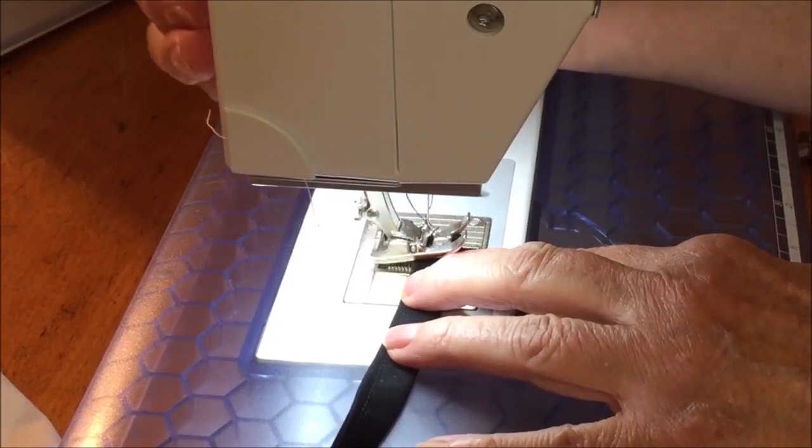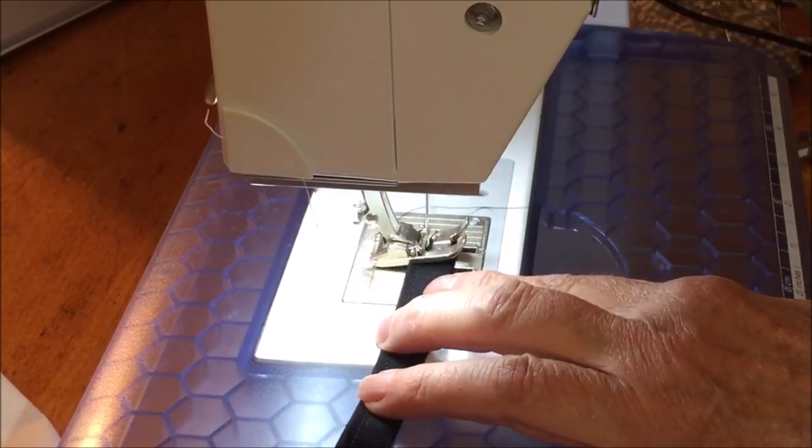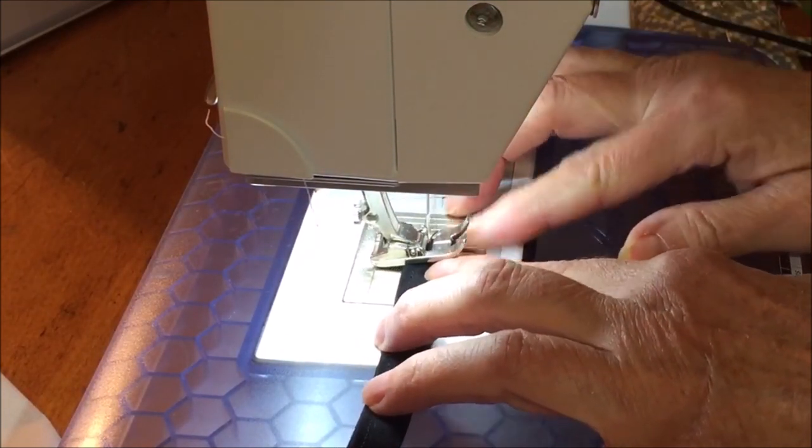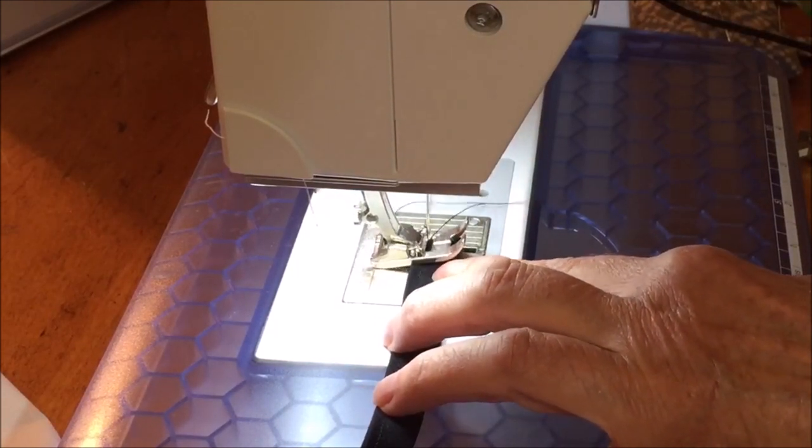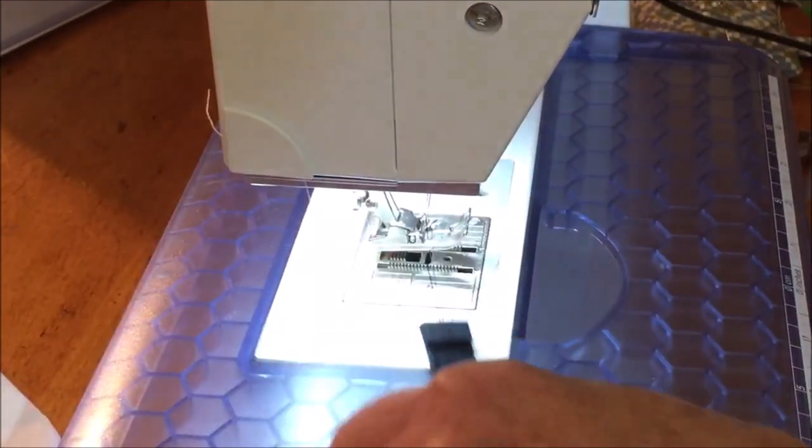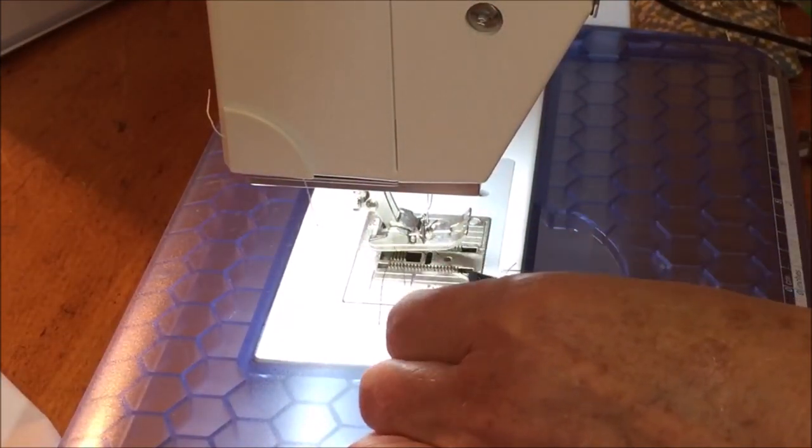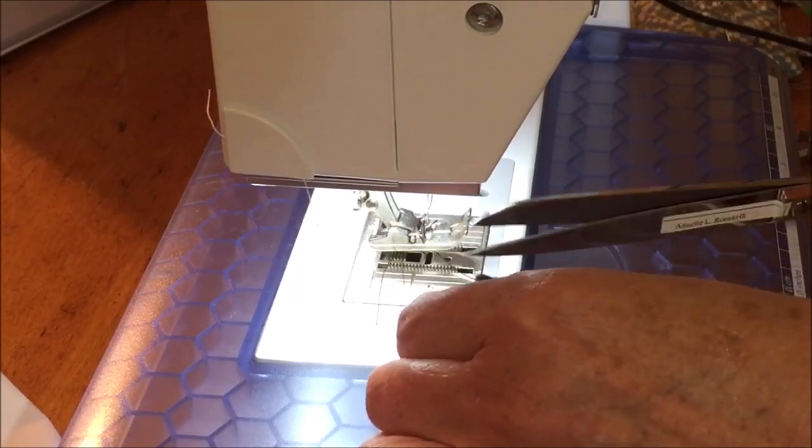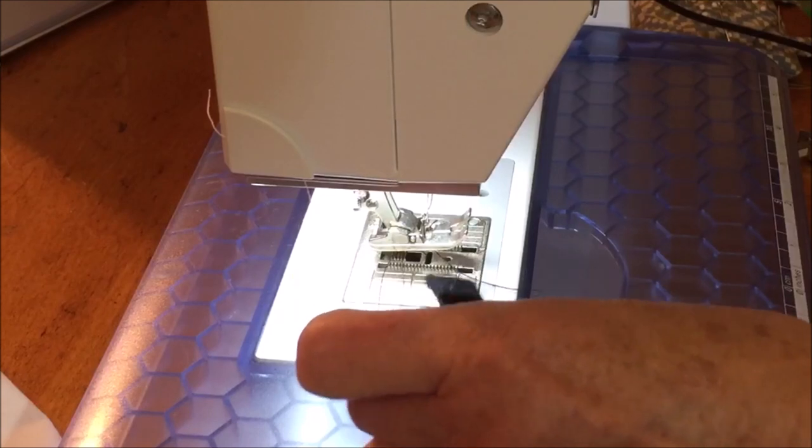I'm going to put it under the presser foot and I'm going to do a little zigzag stitch along there, a narrow one. I'm going to go forward and then back and I'm done and you have a nice looking end. After I get all the threads cut off this is what the end looks like.